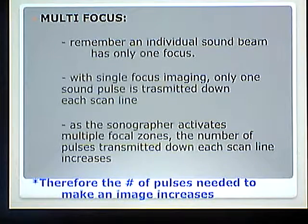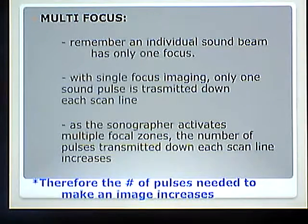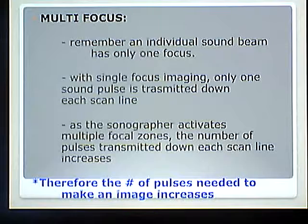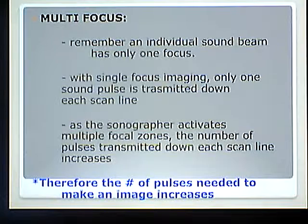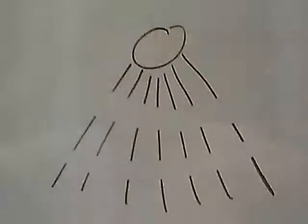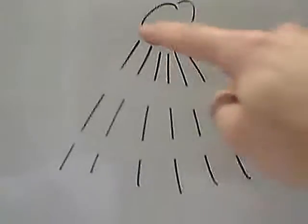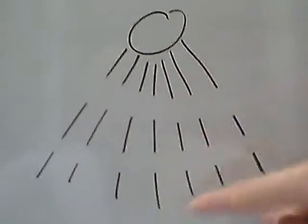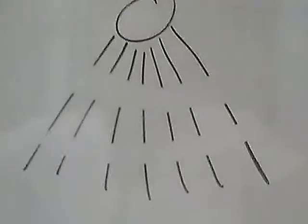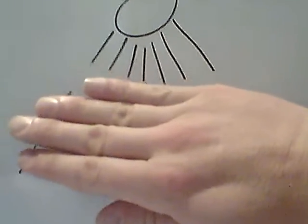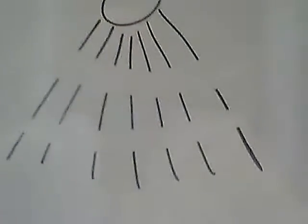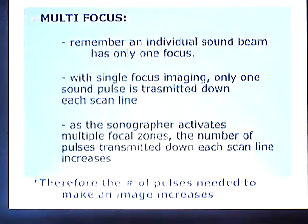As the sonographer activates multiple focal zones, the number of pulses transmitted down each scan line increases. If I have one focus but I want to increase it to three, I now have to send three pulses down each scan line. So instead of before when I had seven scan lines, I now have 21 pulses that I need to use to create that image.